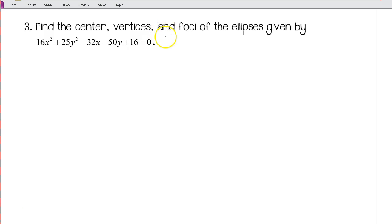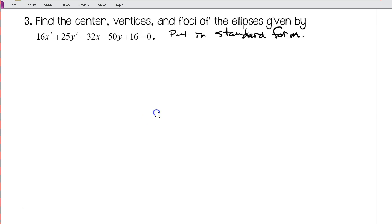What we're going to want to do first is put in standard form. Now we've done something similar with circles where we had to complete the square twice. This is going to get a little bit more complicated. So if you have any questions about the steps make sure that you ask, because there's a couple of key points in the solution here where if you're not really sure what's going on you're not going to be able to get the correct answer.